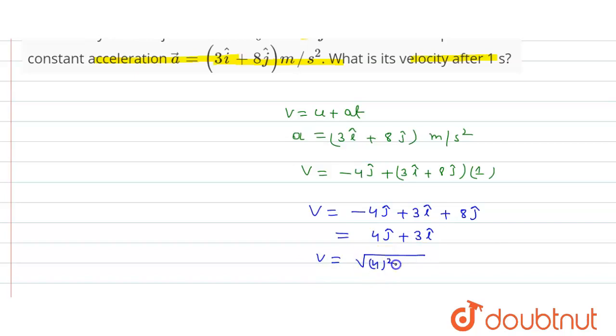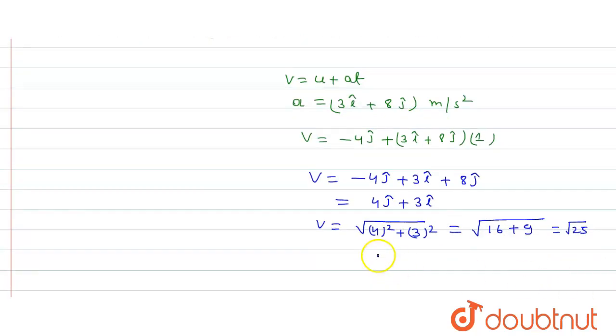So velocity v will be under root of 4 square plus 3 square, that equals under root of 16 plus 9, that equals under root of 25. So from here v equals 5 meter per second.